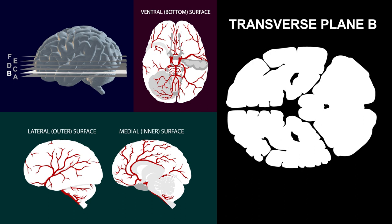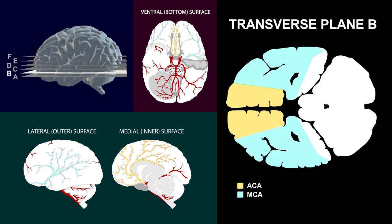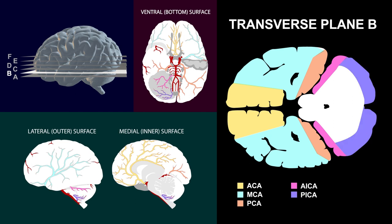Moving on to the next section: the anterior cerebral arteries again supply the medial rostral portions of the hemispheres, the middle cerebral arteries supply the lateral rostral portions, and the posterior cerebral arteries supply the medial caudal portion of the cerebrum. The anterior inferior cerebellar arteries and posterior inferior cerebellar arteries supply the outer portion of the cerebellum, while the superior cerebellar arteries, which are dorsal to them, supply the central portion. The brainstem is now supplied by branches from the basilar artery, formed where the two vertebral arteries come together.